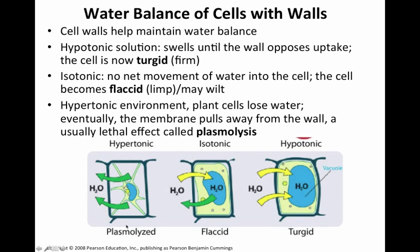If the plant cell is placed into a hypertonic solution — greater solute in the solution compared to inside the cell — water will leave. The plant cell loses water and eventually the membrane will pull away from the wall. This is lethal to a plant cell and it is called plasmolysis. You must understand the difference in osmosis in animal cells versus plant cells.